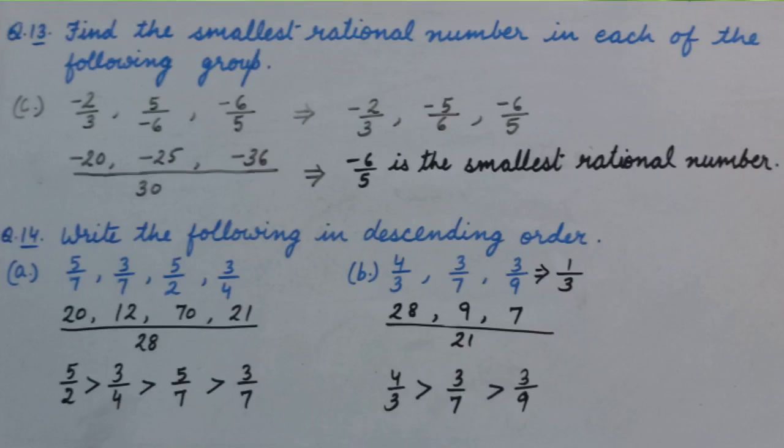Numerator for minus 2 upon 3 is minus 20. Minus 5 upon 6 is minus 25. And minus 6 upon 5 is minus 36. Now which is the smallest numerator here? Yes, minus 36. So minus 6 upon 5 is the smallest rational number.